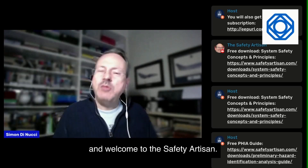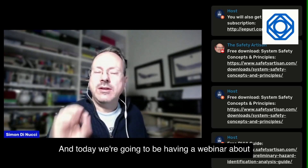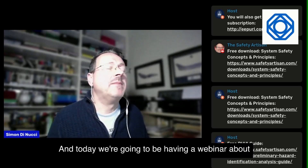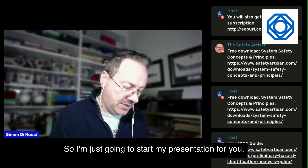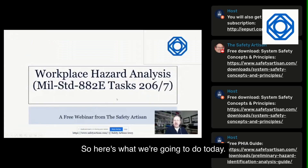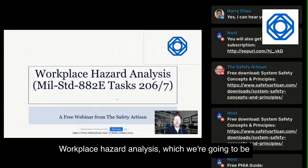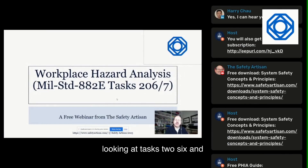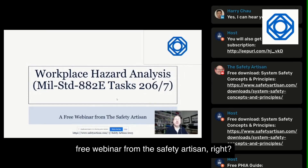Hello everyone and welcome to the Safety Artisan. Today we're going to have a webinar about OSHA and HHA — we'll find out what those are in just a moment. We're going to be looking at workplace hazard analysis, specifically tasks 206 and 207 of MIL-Standard 882E. It's a free webinar from the Safety Artisan.